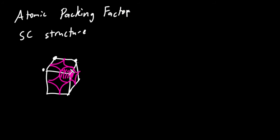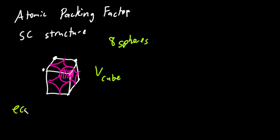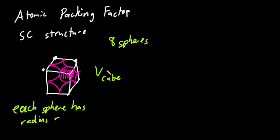For a simple cubic structure: you have eight spheres, each with radius r. The volume of the cube is going to be (2r)³ which equals 8r³.